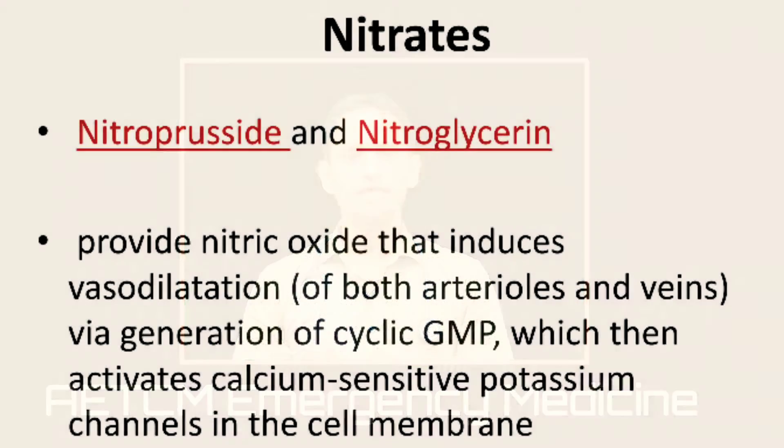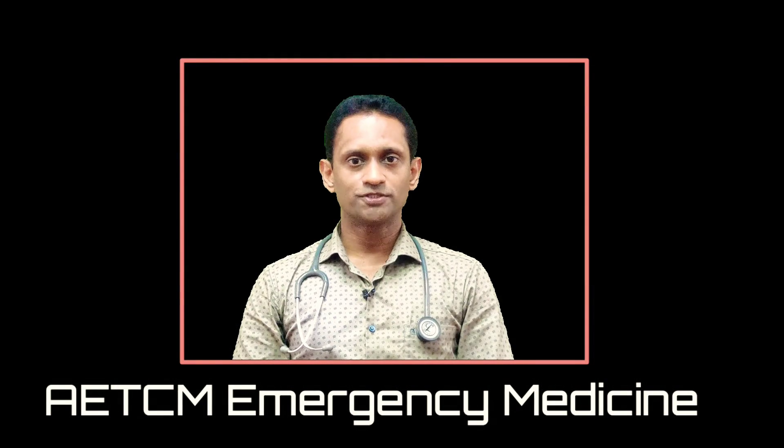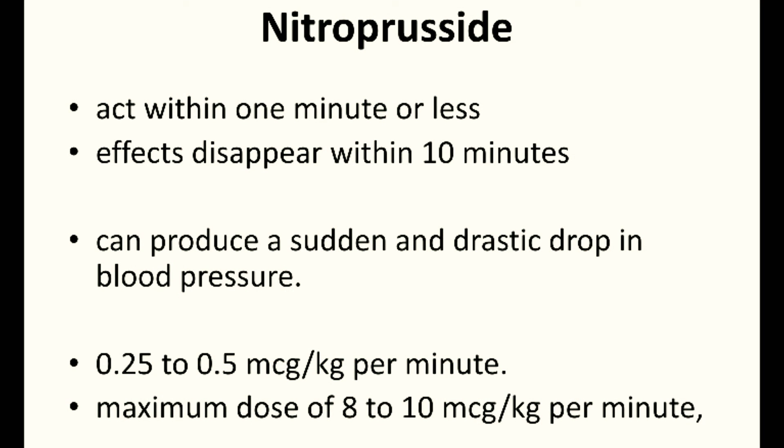Nitrates are commonly used agents. Under this group are nitroprusside and nitroglycerin, which provide nitric oxide that induces vasodilation of both arterioles and veins. Nitroprusside acts very fast — within seconds, not more than one minute — and its effect disappears within 10 minutes of stopping the drug.